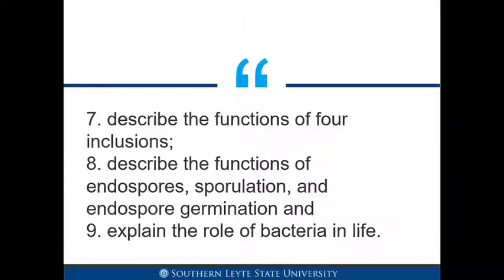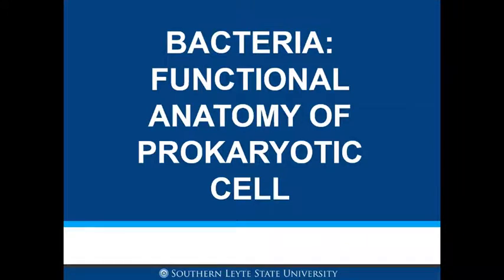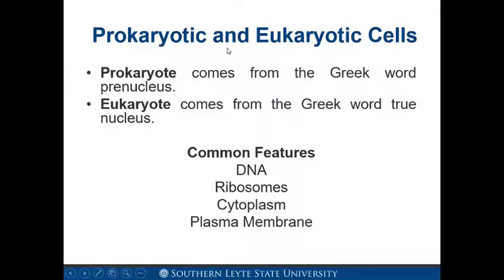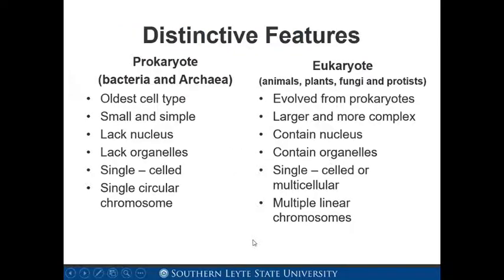Our first reporter is Ms. Alvar. Bacteria: functional anatomy of prokaryotic cell. Prokaryotes comes from the Greek word, and eukaryotes comes from the Greek word as well. Their common features are DNA, ribosomes, cytoplasm, and plasma membrane. Distinctive features: prokaryote is the oldest cell type, small and simple, lacks nucleus, lacks organelles, single-celled, and has a single circular chromosome.